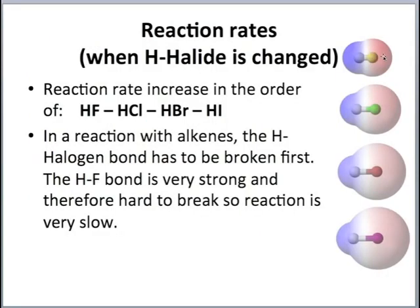Looking at hydrogen fluoride, hydrogen chloride, hydrogen bromide, and hydrogen iodide: in the reaction with alkenes, the bond between the hydrogen and the halogen must be broken first. The H–F bond is very strong because fluorine is quite a small atom, making it hard to break, so the reaction is very slow. As we go down the halogen group, the atomic size increases, so iodine has a much weaker bond and is much easier to break. The general trend is that reactivity of hydrogen halides increases going down the group.